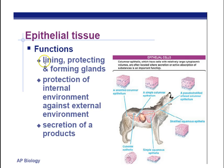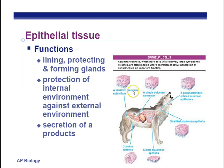Here's some additional information about epithelial tissue. Its function is protection of the internal environment against the external environment — basically it's a barrier between the external and internal environments. There are a variety of different types of epithelial tissue.